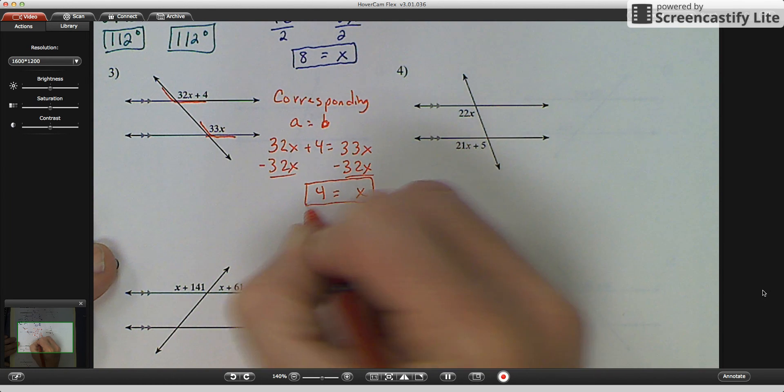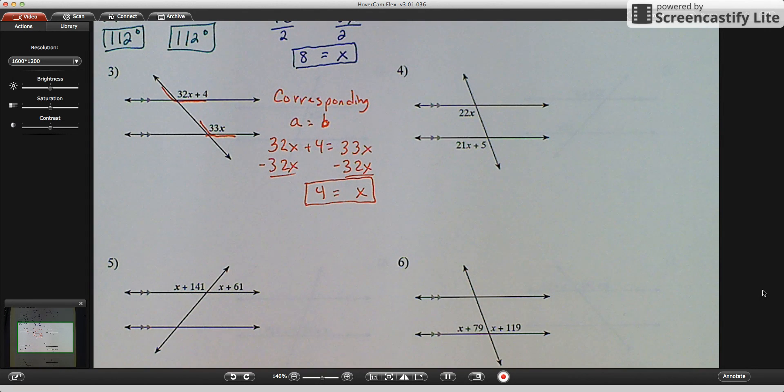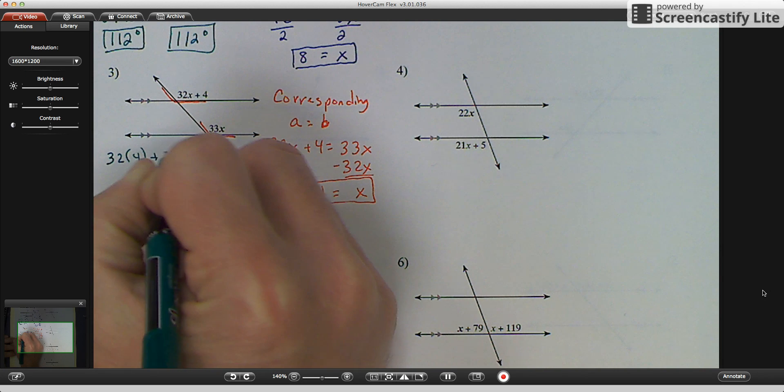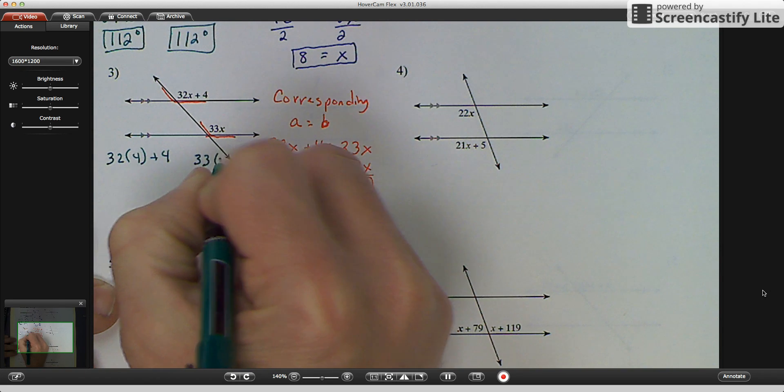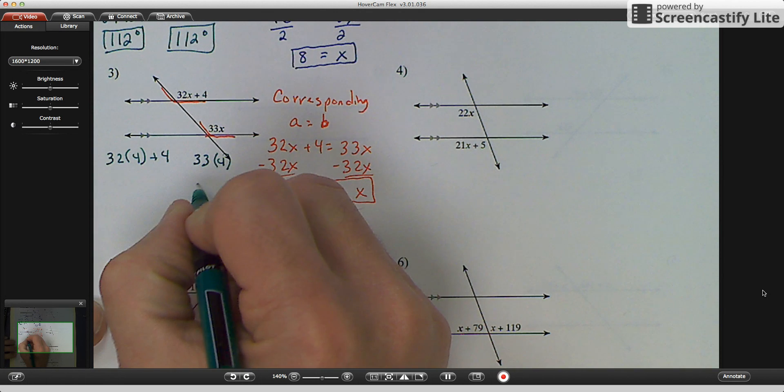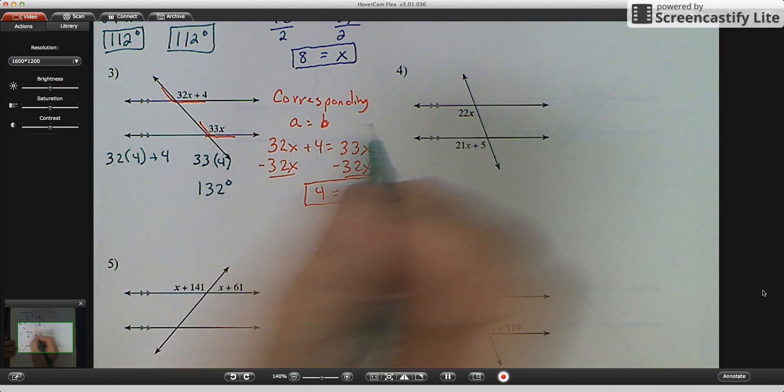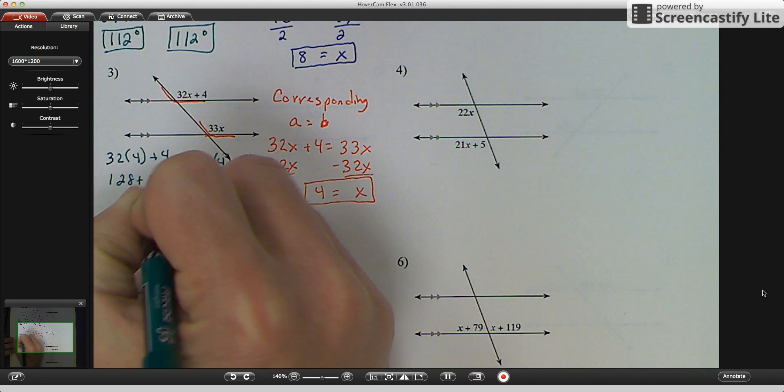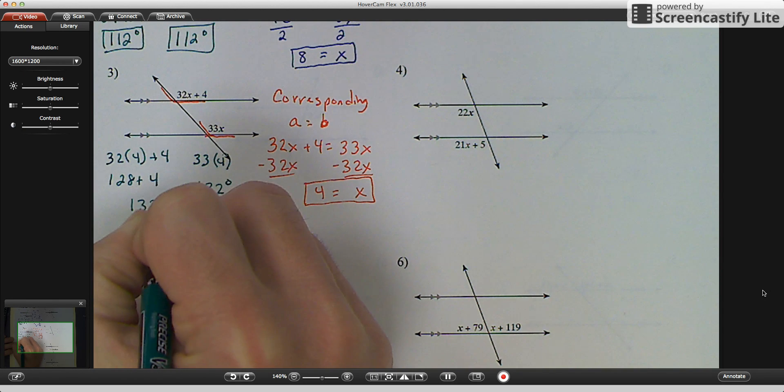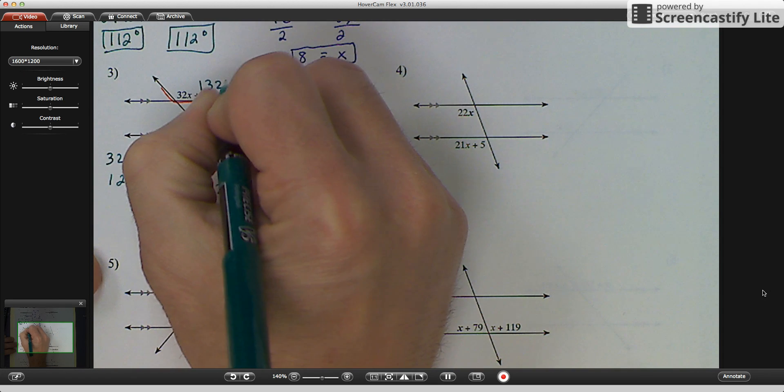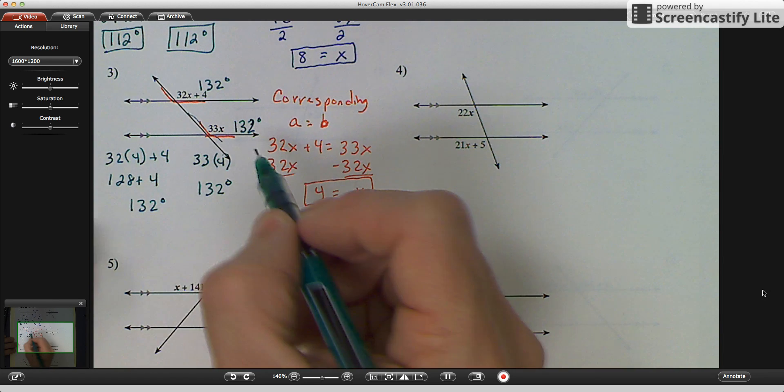So I've done part 1, corresponding, part 2, solve for x. Part 3, I'm going to substitute in to find the measurements. And again, they should be the same. So 32 times 4 plus 4, and 33 times 4. Well, 33 times 4 is 132 degrees. And 32 times 4 is 128. But I add 4 to that, and I get 132 degrees. So again, 132 degrees here. And that makes sense because, again, we have two obtuse angles.